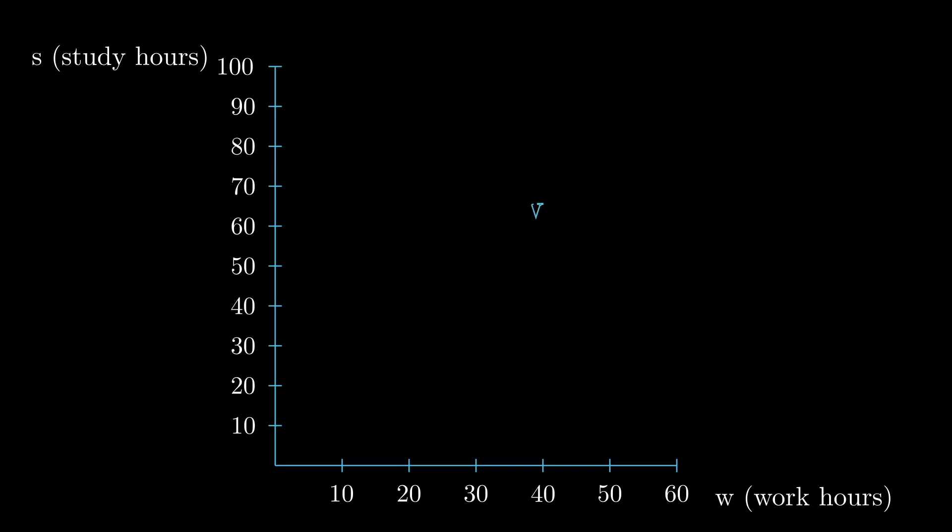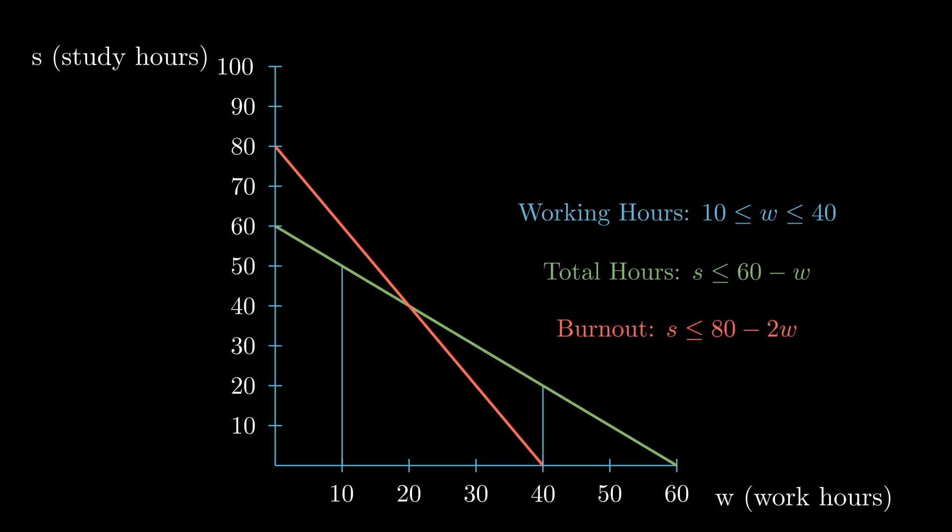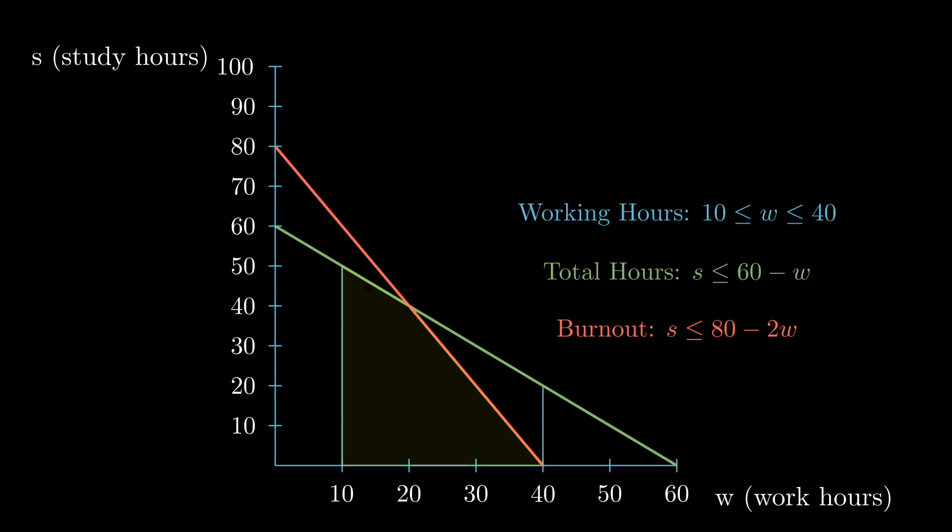Let's graph w between 10 and 40. We only had 60 total hours. Remember, that was the inequality w plus s is less than or equal to 60. Or we could say s is less than or equal to 60 minus w. Also, our burnout inequality, we could write as s is less than or equal to 80 minus 2w. And if we focus in on the intersection of all of these solutions, we have our so-called feasibility region.